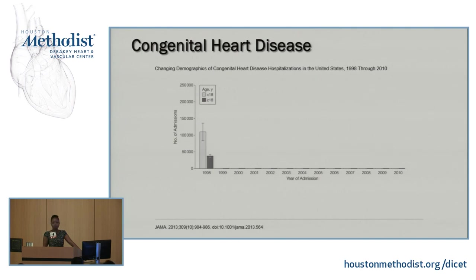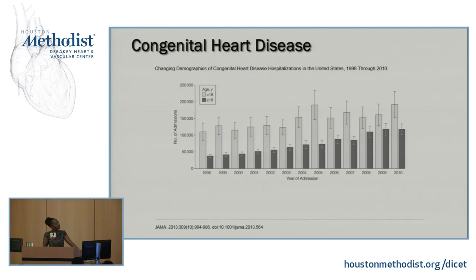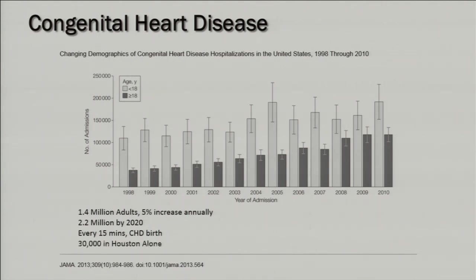This diagram shows the changing demographics of patients in the United States admitted with congenital heart disease. Between 1998 and 2010, we see a gradual rise in the number of patients 18 and above, trending closely with patients below 18 being admitted. This population is growing. There is about a 5% annual increase, currently about 1.4 million adults. By 2020, we expect 2.2 million adults living with adult congenital heart disease. Every 15 minutes, a child is born with congenital heart disease — here in Houston alone, about 30,000 patients live with it into adulthood.